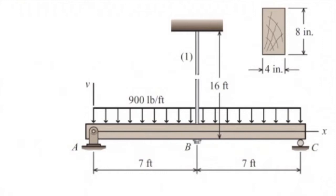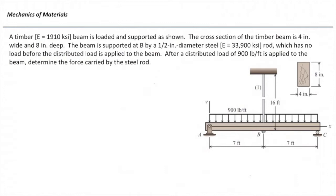And at the middle there is a rod which connects that to a fixed support on top. The rod is made of steel which has modulus of elasticity of 33,900 KSI and it has a circular cross section with a diameter of half inch and it has no deflection before applying the load. But after we apply the load the entire system deforms and we want to see how much is the value of the force in that rod. How we can solve this problem?